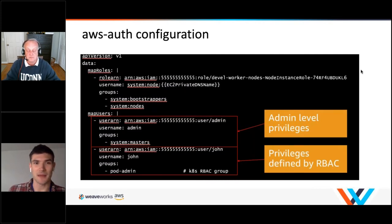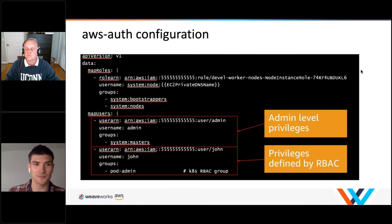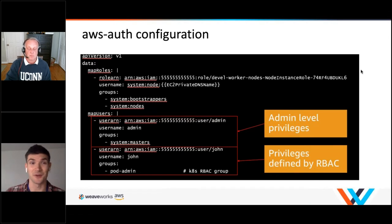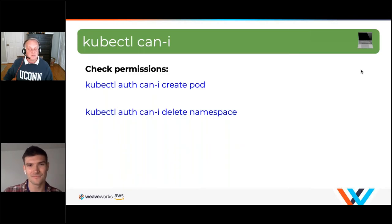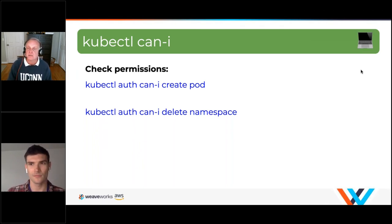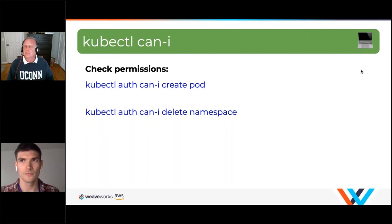The aws-auth ConfigMap is where you map roles or users. If you're using assumed roles via SSO or Okta, you can map a role to a system group, or directly map an IAM user. For example, John has the group 'pod-admins' and the admin user is mapped to 'system:masters' — that's the person with control over the whole cluster. The quick way to test authentication and authorization is kubectl auth can-i — it checks whether a given user can perform a specific Kubernetes API action and returns true or false.